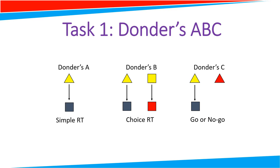Donder's A is simple reaction time, Donder's B is choice reaction time, and Donder's C is go and no-go. Each of those different types of reaction time require different stages of processing.